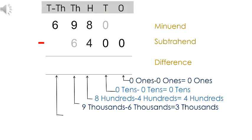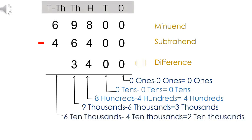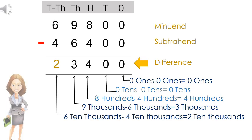Subtracting the ten thousands column: six ten thousands minus four ten thousands equals two ten thousands. Write two in the ten thousands column. So Aditi is left with rupees 23,400.